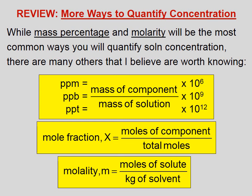Let's review the ways to quantify concentration. While mass percentage and molarity will be the most common, there are many others worth knowing — parts per million, parts per billion, parts per trillion. In particular, AP Chemistry students will need working knowledge of mole fraction, which is why it has a double star. AP Chemistry students are currently required to work with mass percentage, molarity, and mole fraction, though molality and others can also come in handy.